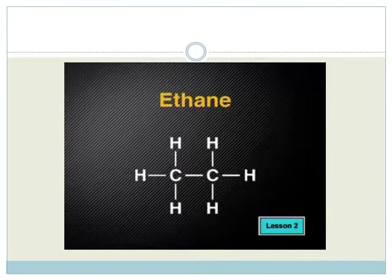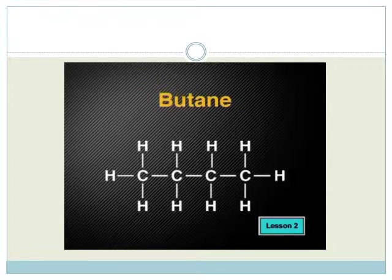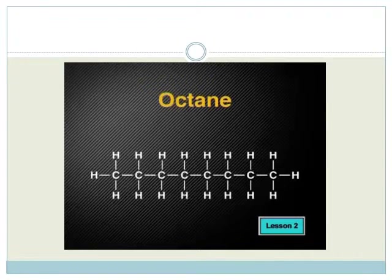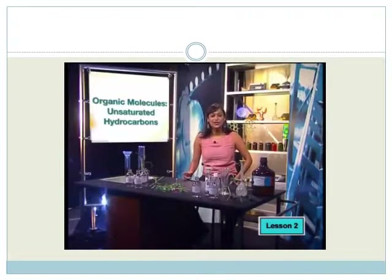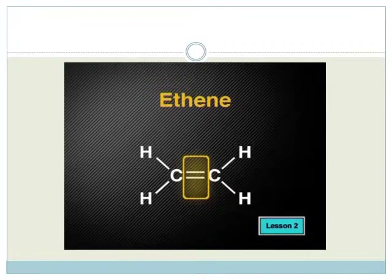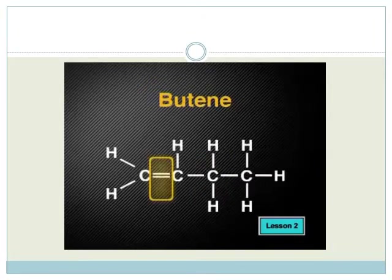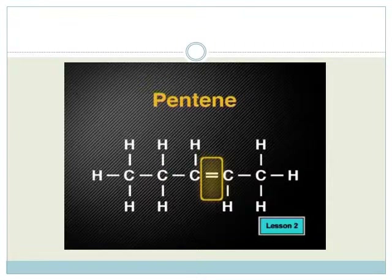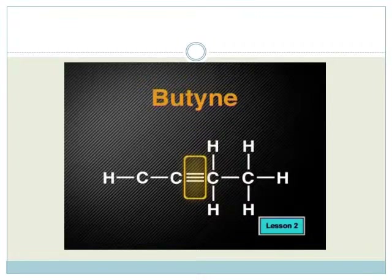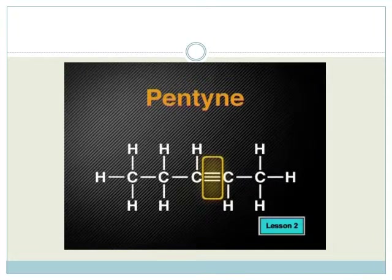Remember, in our previous lesson, we looked at the homologous series called the alkanes. These molecules all have single carbon-to-carbon bonds, and their names end in A-N-E. Today, we'll look at examples of hydrocarbons that belong to two other homologous series, the alkenes and the alkynes. The names of all the molecules belonging to the alkenes end in E-N-E. These molecules also share a special structure — they all have one double bond between two carbon atoms. In the same way, the names of all the molecules belonging to the alkynes end in Y-N-E, and these molecules all have one triple bond between two carbon atoms.